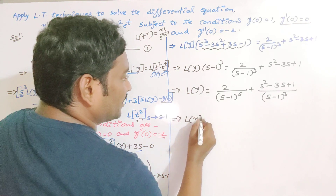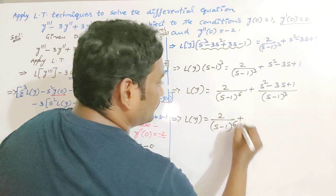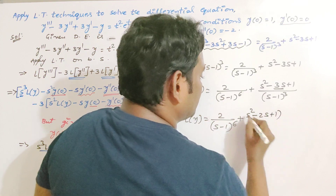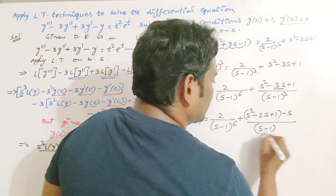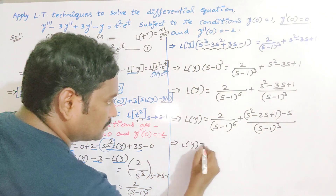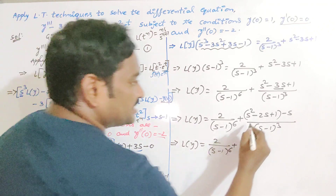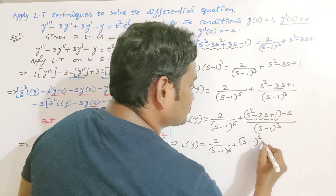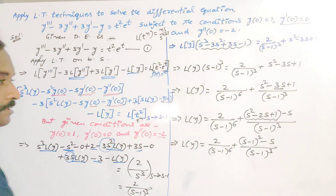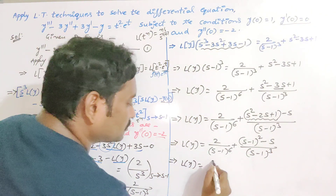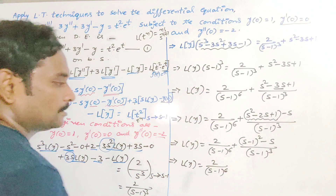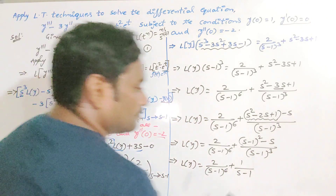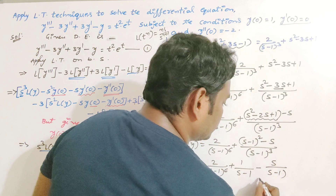We write minus 3S as minus 2S minus S, so the numerator S² minus 3S + 1 becomes S² minus 2S + 1 minus S, which is (S minus 1)² minus S. Separating the terms: L{y} = 2/(S minus 1)⁶ + (S minus 1)²/(S minus 1)³ minus S/(S minus 1)³. The (S minus 1)² and (S minus 1)³ partially cancel, leaving 1/(S minus 1) minus S/(S minus 1)³.